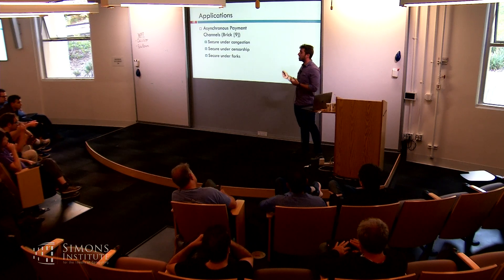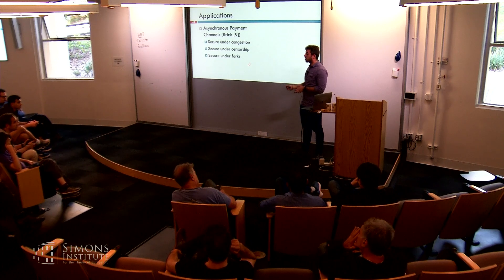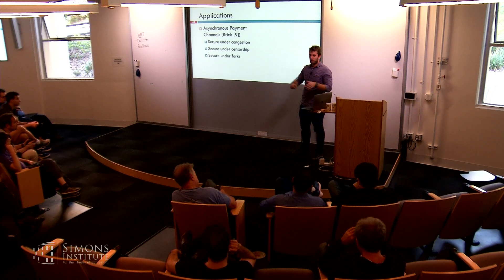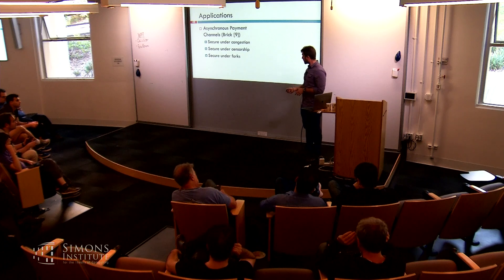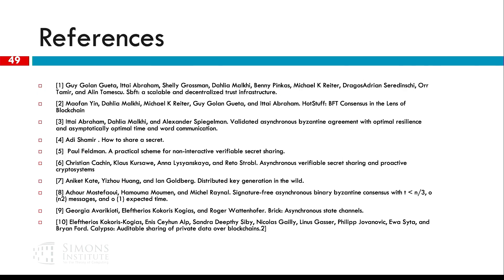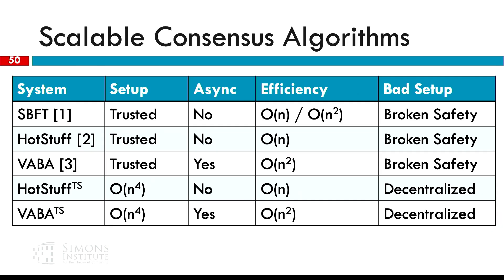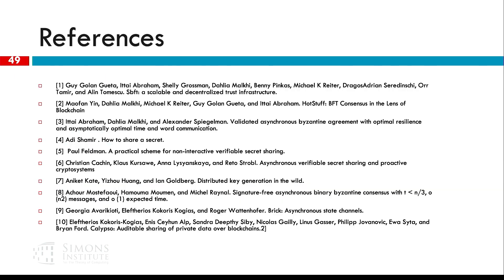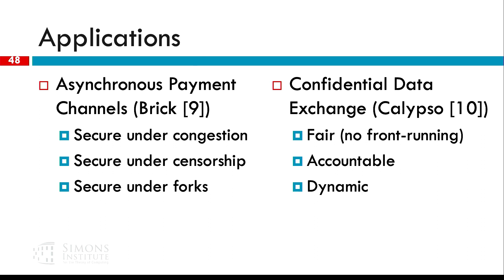Some cool stuff we can do: one is we can do asynchronous payment channels, which means payment channels that are secure under congestion and secure under censorship. They can even be secure under temporary forks — not long forks, but if you fork a couple of blocks it's still good enough. We can also use it to do confidential data exchange over the blockchain — it's fair, it's accountable, it's dynamic. If you know how payment channels work, you have a delta time that the dispute transaction has to show up. If the blockchain is congested, it might not show up, making it insecure. This protocol is secure even in that case — it can take arbitrarily long to put the closing transaction on chain.